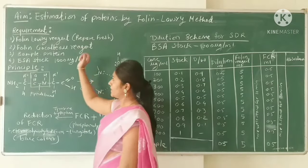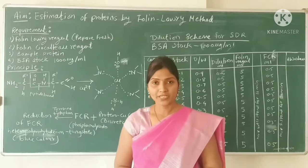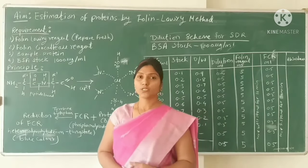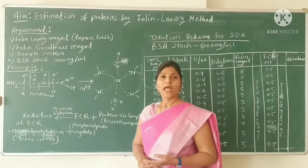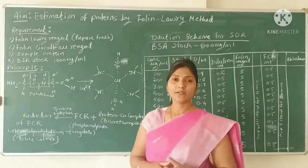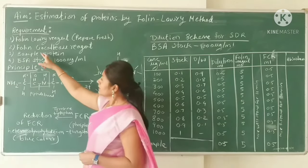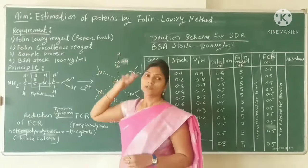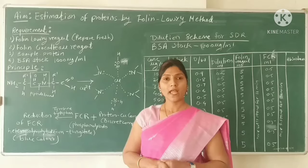First, we need the Folin-Lowry reagent, which is prepared freshly using two reagents: Reagent 1 contains NaOH and sodium carbonate, and Reagent 2 contains copper sulfate and sodium potassium tartrate. To prepare the Folin-Lowry reagent, mix 50 ml of Reagent 1 with 1 ml of Reagent 2. We also need the Folin-Ciocalteu reagent (FCR), which is readily available — just take equal volumes of FCR reagent and water.